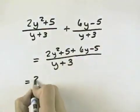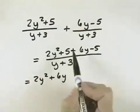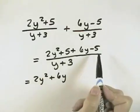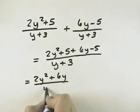Now combining like terms, we have 2y squared plus 6y, and the positive 5 and negative 5 cancel each other out. And then in the denominator, we have our y plus 3.